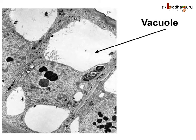Sometimes we see a blank space-like thing in the cell, as if there is a vacuum placed in the cell. That structure is called a vacuole. Some cells have many small vacuoles, while many plant cells have big vacuoles. Vacuoles are actually storage bubbles which may store nutrients, waste, etc.